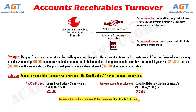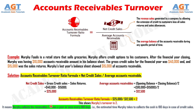This gives 2 as the accounts receivables turnover ratio. This means Murphy collects his receivables 2 times a year, or once every 180 days. That is, the estimated time Murphy takes to collect the cash is 180 days in the case of credit sales.